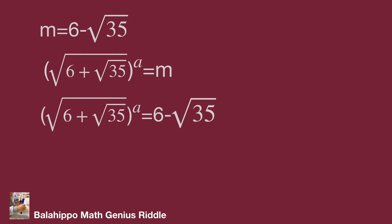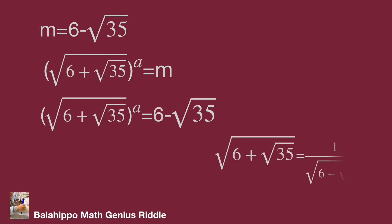The quantity (√6 + √35) to the power of a equals 6 + √35, and since √6 + √35 equals 1 over (√6 − √35), we get a = −2. We get the answer of a: a = 2 or a = −2. Do you get the same result? Hope you enjoy the video. Thank you.